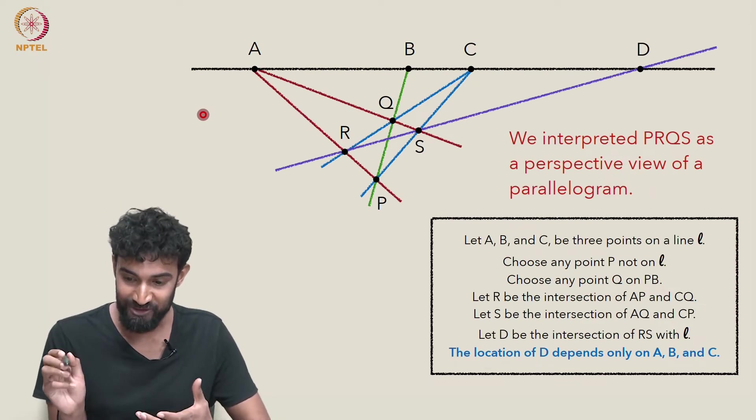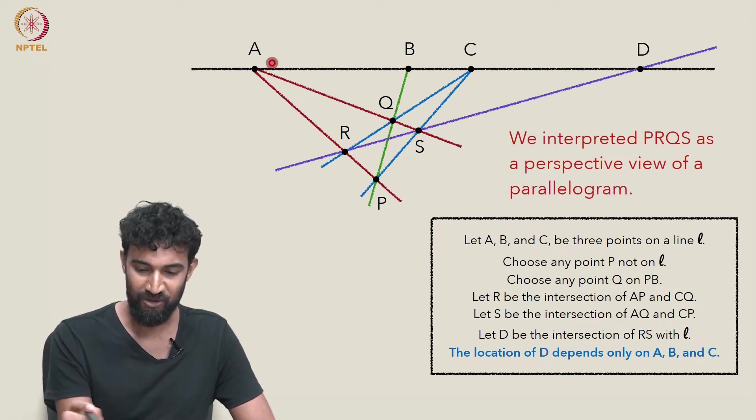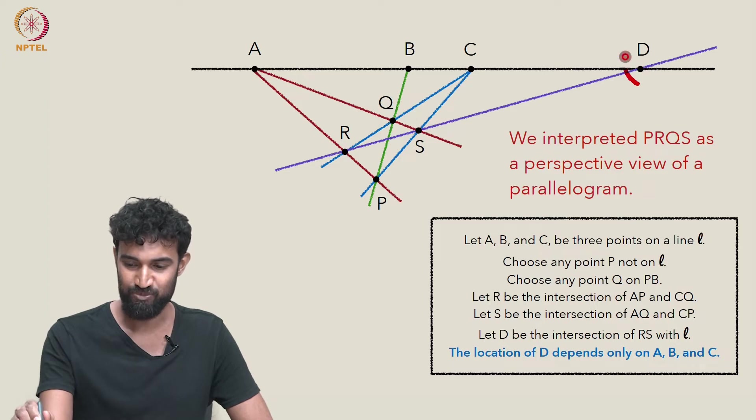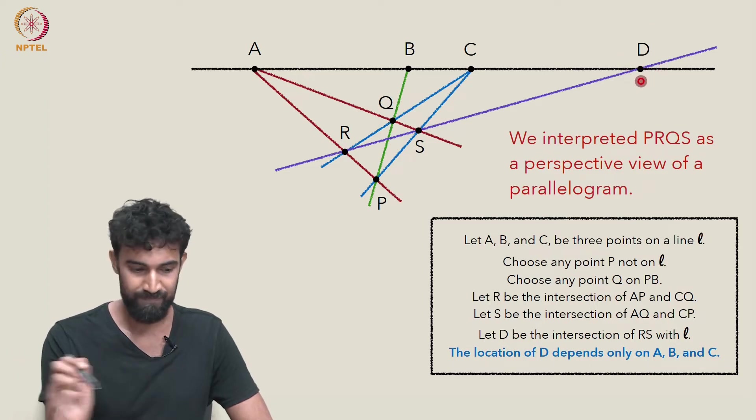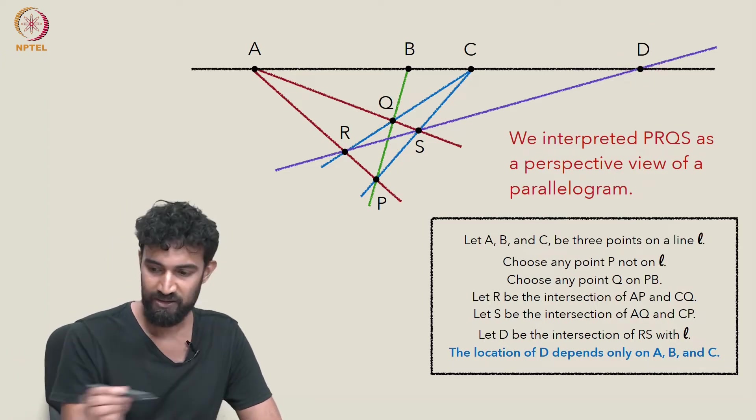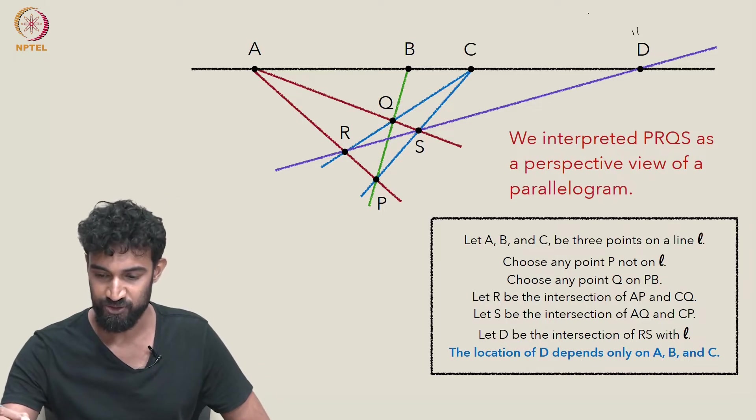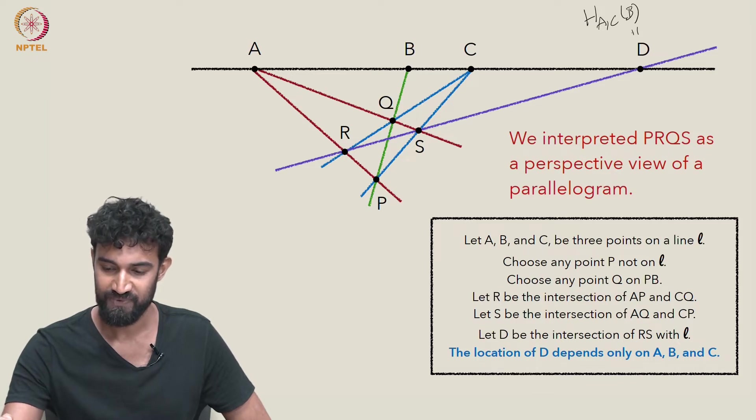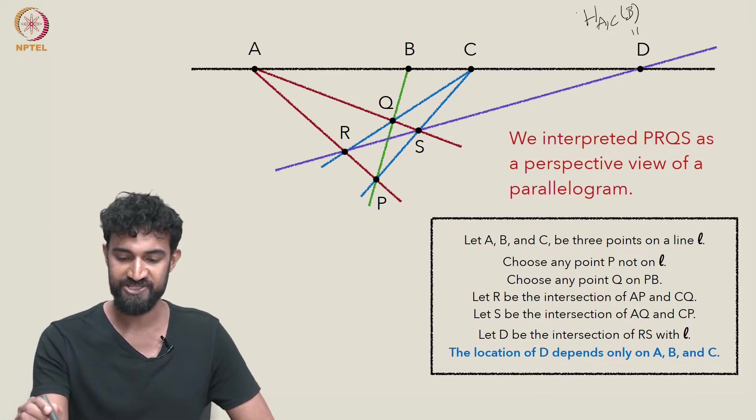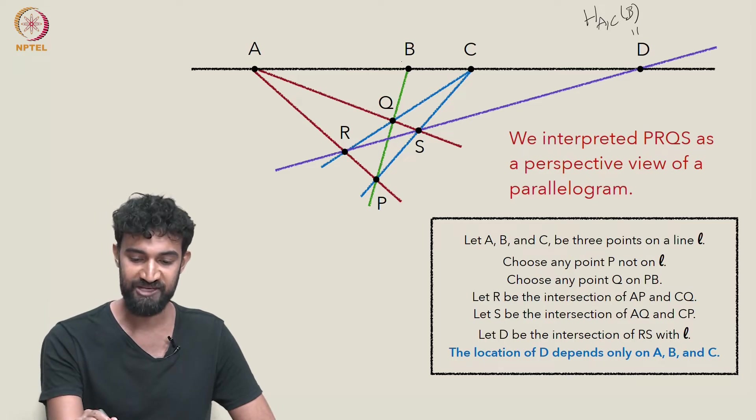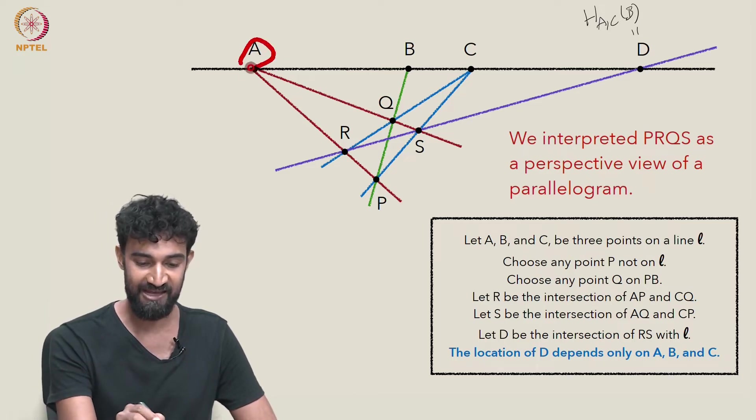So just to refresh your memory, how did we prove? The harmonic conjugate is this point D. In other words, the notation was that HAC of B is equal to D. HAC of B is the harmonic conjugate of B with respect to A and C.